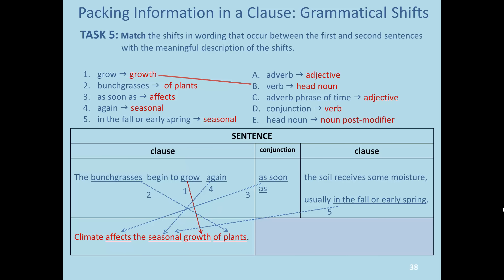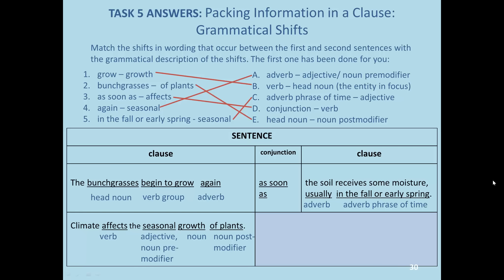We're at task five now. In this task, please match the shift in words to the shift in the grammatical category. For example, from grow to growth matches with the shift from verb to head noun — that's shown by the red arrow. So, from 'bunch grasses' to 'of plants' — which category does that match with? Here are the answers. We'll be practicing some of these shifts looking ahead in the video.